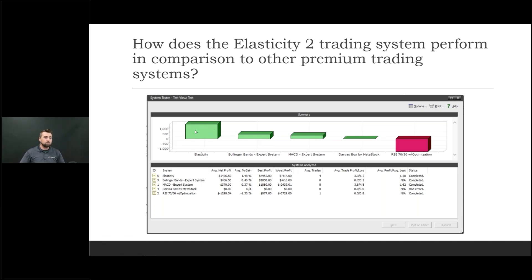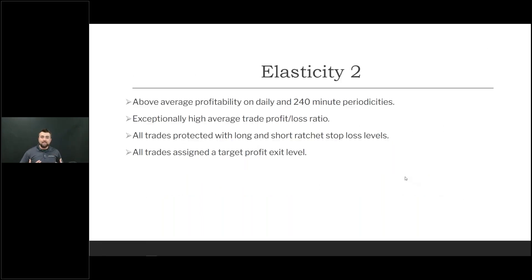As you can see, it performs really well, especially against a lot of the systems built into Metastock. This is a comparison of it versus the Bollinger Band Expert system and the MACD, and you can see it has the better profit ratio. Some key highlights: you get above-average profitability compared to many other systems on the daily, and Tim also likes to use the 240-minute periodicity. It has an exceptionally high average trade profit-loss ratio, all trades are protected with long and short ratchet stop loss levels, and all trades give you a target profit exit level — so you know exactly when to get in and out, protected at all times.